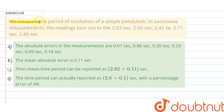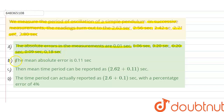Hello students. The question given here is: we measure the period of oscillation of a simple pendulum. In successive measurements, the readings turn out to be 2.63s, 2.56s, 2.42s, 2.71s, and 2.80s. Option A states the absolute errors in the measurements. Option B says the mean absolute error is 0.11 second. Option D says the time period cannot be reported with a percentage error of 4 percent. Let us check how many options are correct.